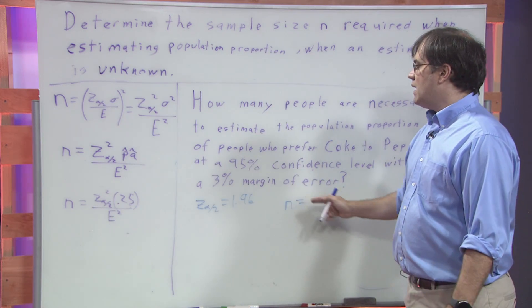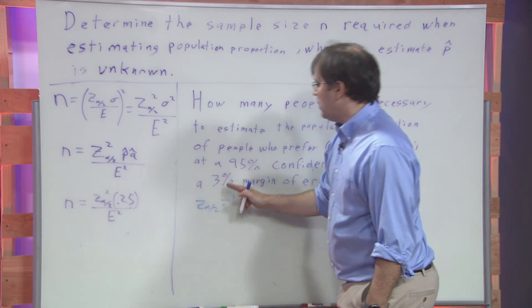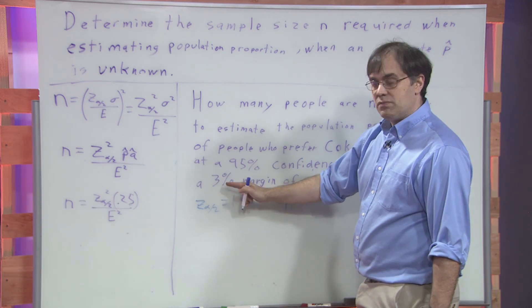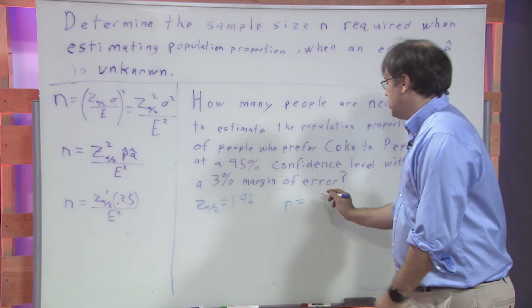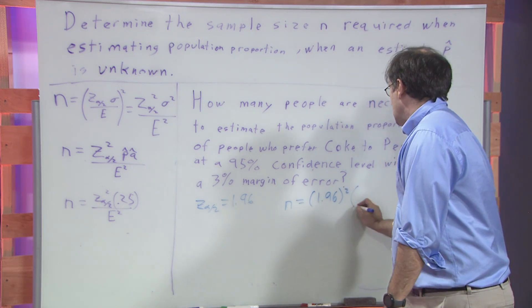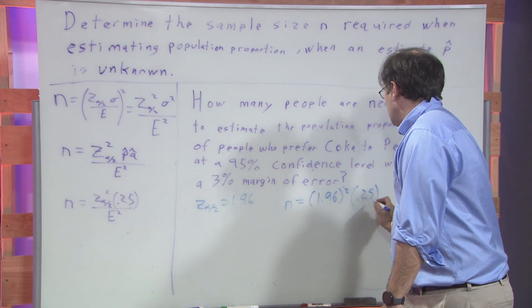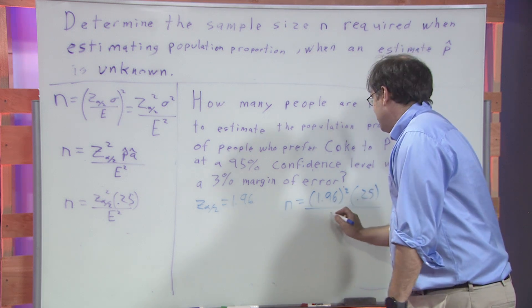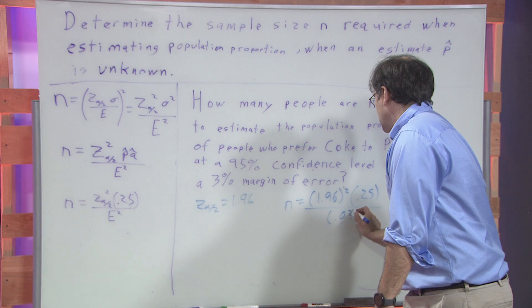Z alpha over 2 is 1.96. The margin of error is 3%, which is 0.03. And we just plug into the formula: 1.96 squared times 0.25 all over 0.03 squared.